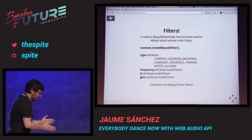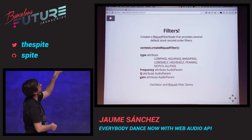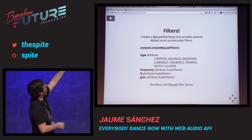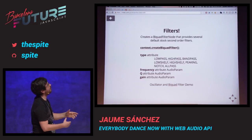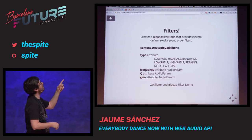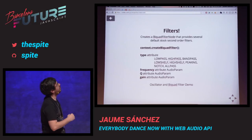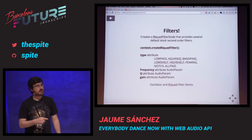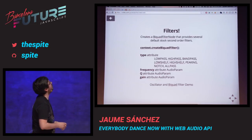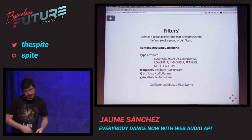Filters. This is a very useful type of node — it creates a second-order filter with all these types. Low pass: only lower frequencies below the frequency attribute are let through. High pass: the opposite, only frequencies over that frequency. Band pass: only frequencies around that frequency within the Q attribute are allowed to pass. Low shelf and high shelf are like low pass and high pass but with a gain applied, so you can amplify those frequencies. Peaking is like band pass with amplification.